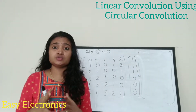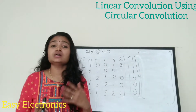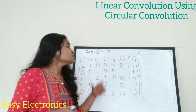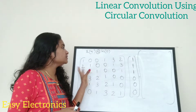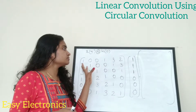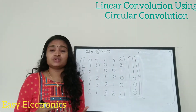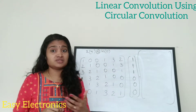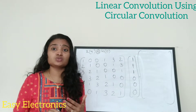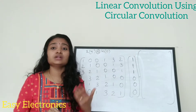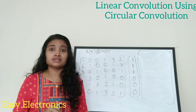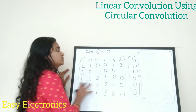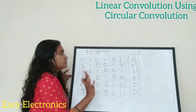Now take the circular convolution of the two new sequences to obtain the linear convolution result. Here I have used the matrix method to do the circular convolution. If you don't know about the circular convolution or the matrix method, please watch the video on circular convolution — I will share the link in the description box.